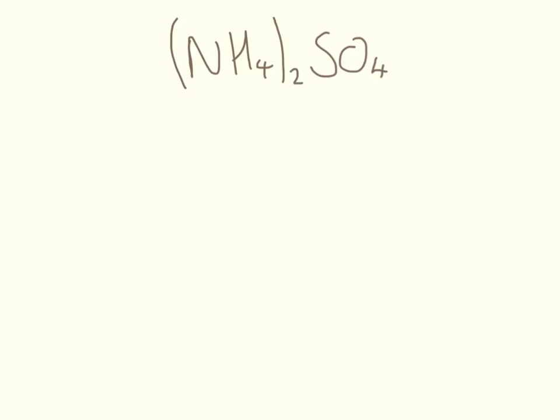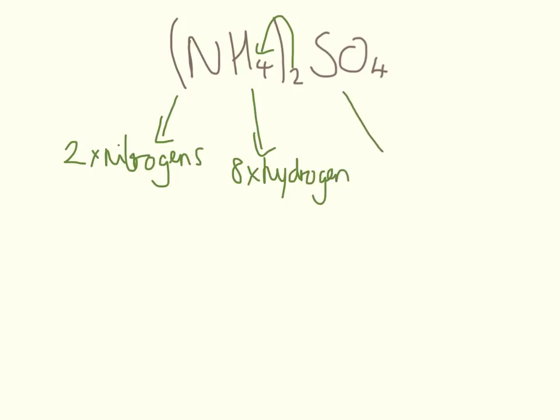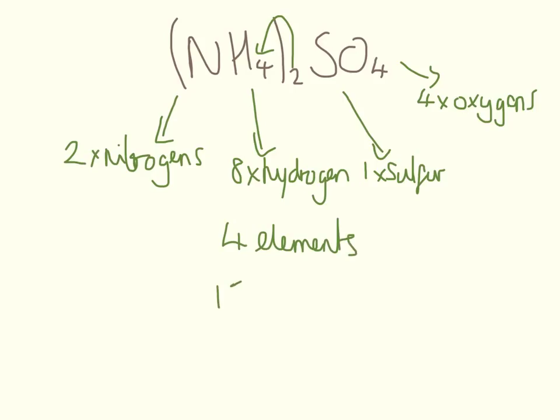Last one here, (NH4)2SO4, super tricky one to finish on. We have two nitrogens. We have two times four, that means eight hydrogens. We have one sulfur. So we have four elements and 15 atoms.